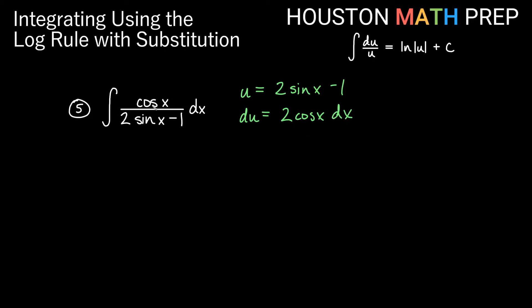Right now, we have all of the bottom being just u. We actually have cosine x dx. So we're off by a factor of 2 here. So if we divide both sides by 2, we could actually use one half du is a replacement for cosine x dx. So this here becomes one half du. We'll bump our one half out front though. Let's say one half, constant multiple, integral du over u. And there's our log rule.